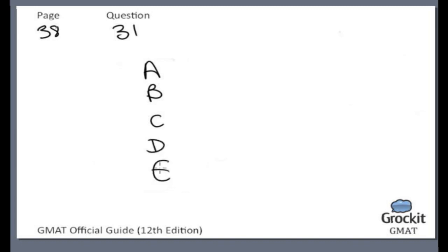Page 38, number 31. Cheever College offers several online courses via remote computer connection in addition to traditional classroom-based courses. A study of student performance at Cheever found that overall, the average student grade for online courses matched that for classroom-based courses. In this calculation of the average grade, course withdrawals were weighted as equivalent to a course failure, and the rate of withdrawal was much lower for students enrolled in classroom-based courses than for students enrolled in online courses. If the statements above are true, which of the following must also be true of Cheever College? This is an inference question — we have to tackle each answer choice and decide which one must be true based on the information given.